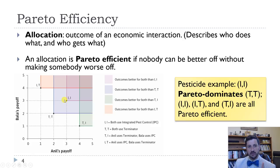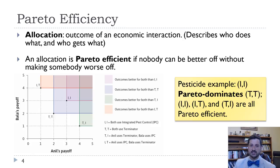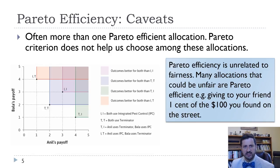Here's one thing to notice: the outcomes IT and TI, where one of them gets four and the other gets one, are also both Pareto efficient — they are not Pareto dominated by any other outcome. Because if we move from 4-1 to 3-3, then Bala actually gets less, even though Anil gets more. In any outcome where somebody gets less but another person gets more, that's not a Pareto improvement. It might be fair — we have to decide what fair means — but Pareto efficiency is, in some ways, a very weak requirement for outcomes.